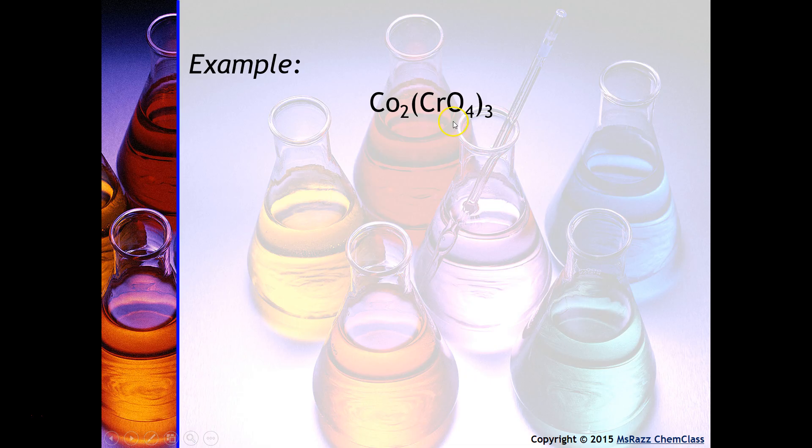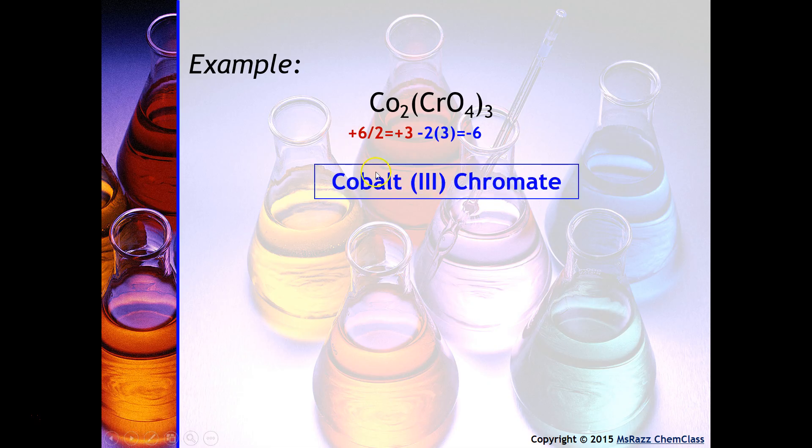Again, we have the chromate ion. We're going to use that to determine the charge on the cobalt. It's minus two times three which gives you negative six. If this side is negative six, that means this side has to be positive six, but again we have to distribute the six among the two cobalts. So therefore you will do positive six divided by two, will tell you that the charge on each cobalt is going to be positive three, and that will be the Roman numeral for cobalt: cobalt three chromate.